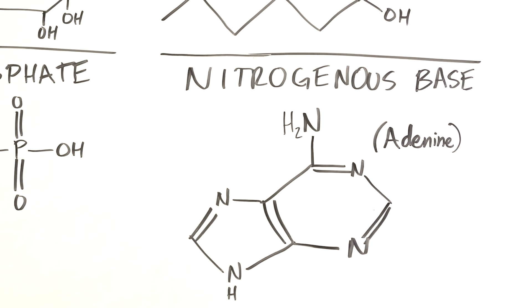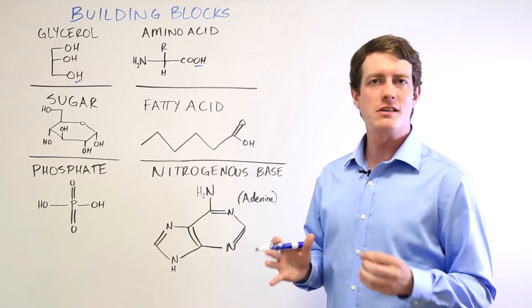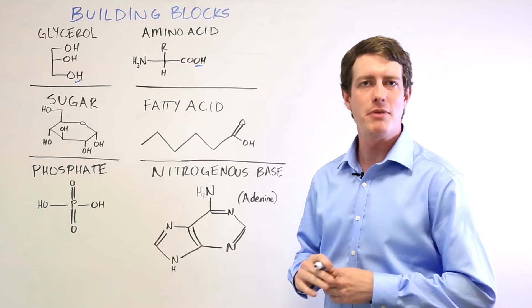If you take a nitrogenous base such as adenine and attach that to three phosphate groups, you have ATP, which is the major energy substrate of all the cells in the human body.